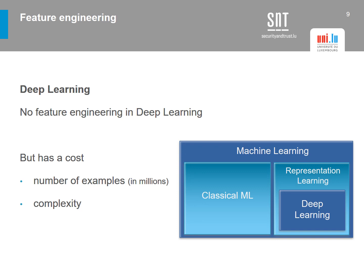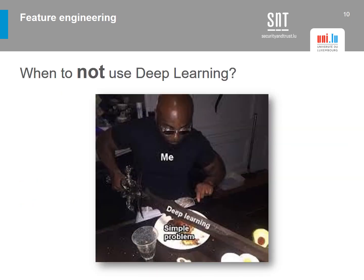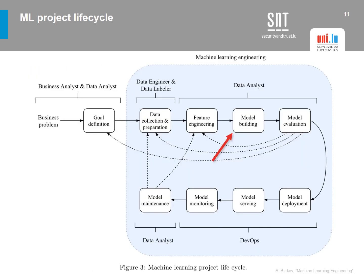When not to use deep learning: although it may seem obvious, it is advisable not to use deep learning just for its hype. Unless we have complex problems, classical machine learning should be sufficient and will save a lot of time. Coming back to the machine learning project lifecycle, the next step is model building, which includes choosing a model for our task and training it. Model building is essentially the construction of our model, and we need to understand what to consider when choosing the right model.